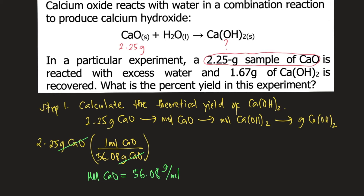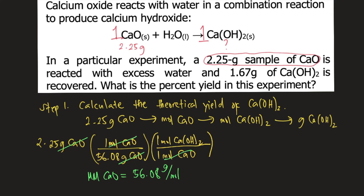The next step is to convert moles of calcium oxide into moles of calcium hydroxide. We look at the balanced chemical reaction: according to it, 1 mole of calcium oxide forms 1 mole of calcium hydroxide. So we put 1 mole of calcium hydroxide on top and 1 mole of calcium oxide on the bottom. The moles of calcium oxide cancel, and now we have moles of calcium hydroxide.